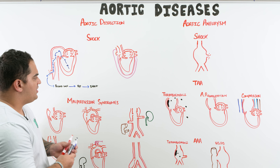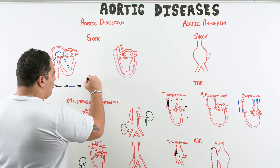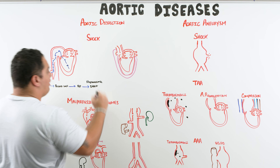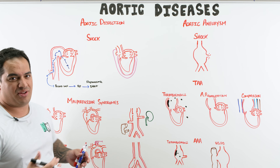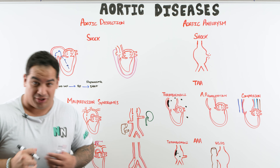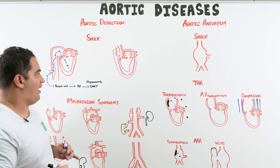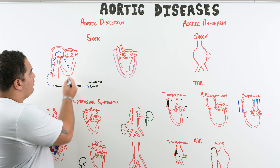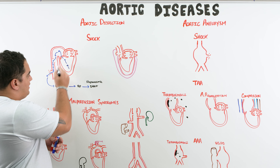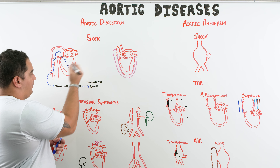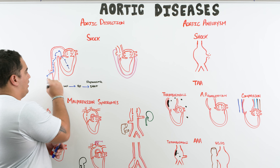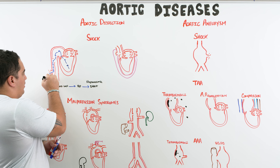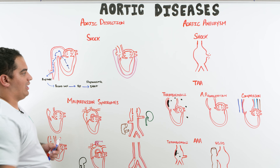When blood pressure drops so severely that multiple organ systems become dysfunctional and the patient requires vasopressor support, that is shock. Specifically, since it results from blood loss, this is hypovolemic shock — also called hemorrhagic shock. So a rupture from aortic dissection can cause this type of shock.